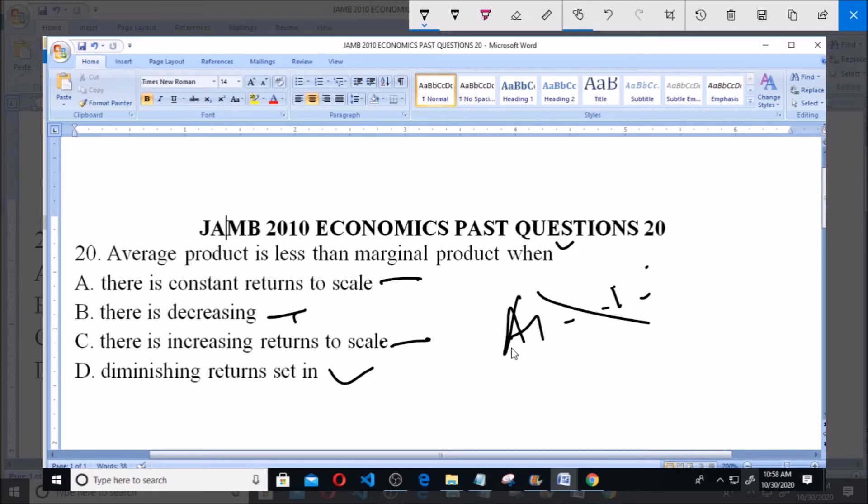So the average product rises to a point that marginal product experiences a decline. So option D is the correct option. Thank you and please subscribe for more questions.